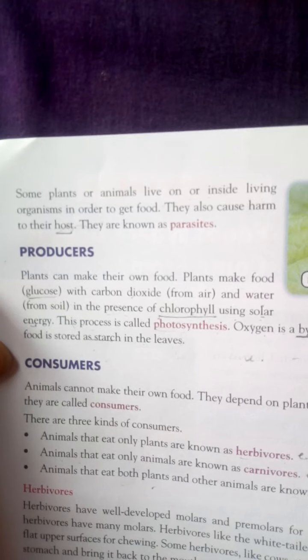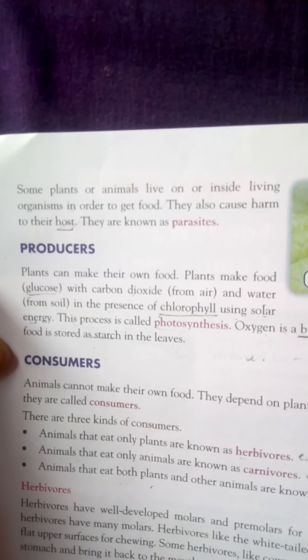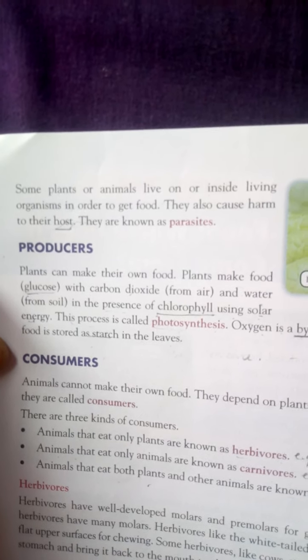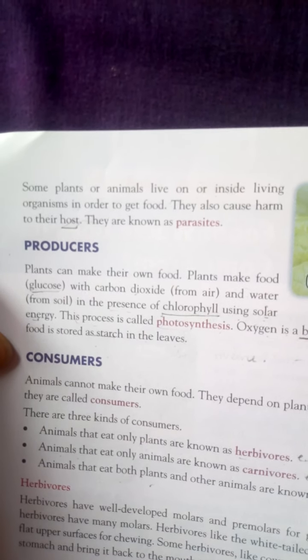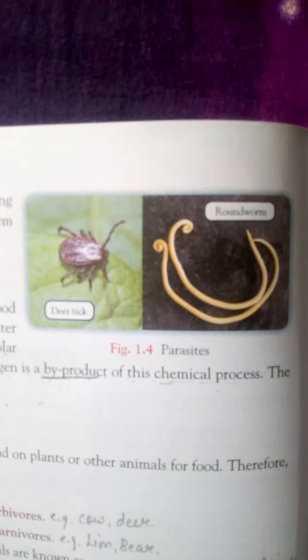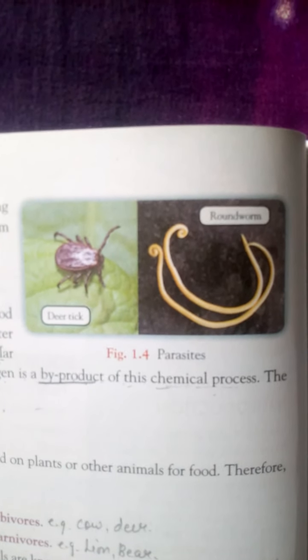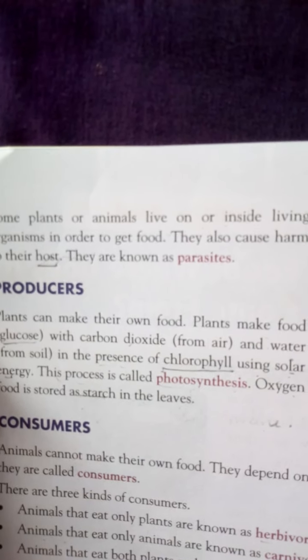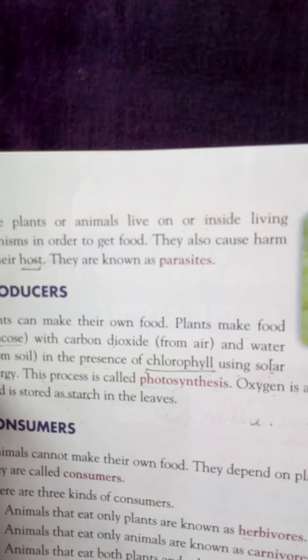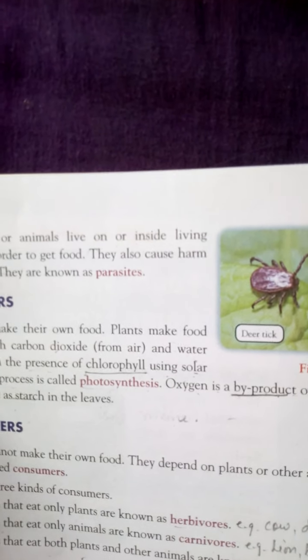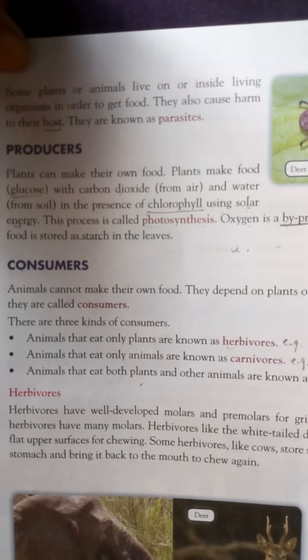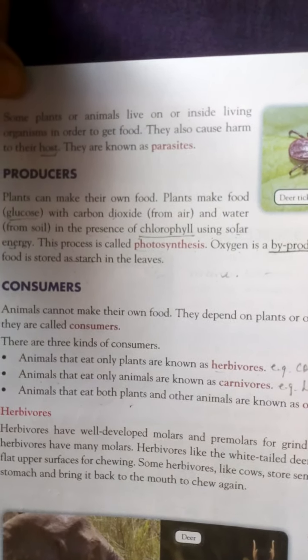The third type of heterotrophs are parasites. These are plants or animals that live on or inside living organisms in order to get food, and they also cause harm to their host. For example, roundworms can live in a human or animal body — that body is the host — and they cause harm to human beings as well as animals.